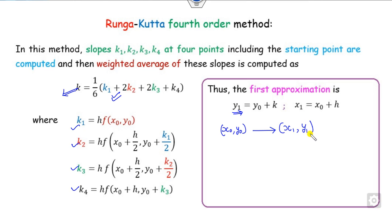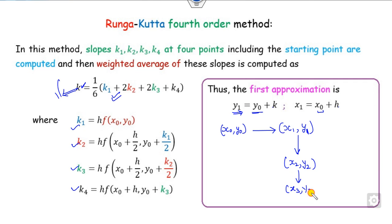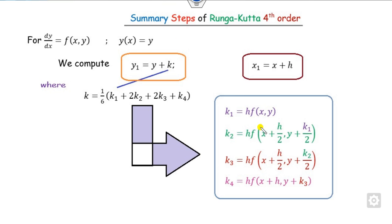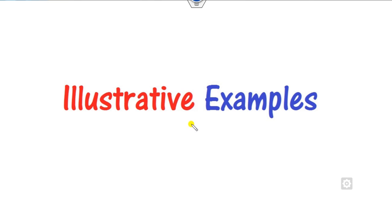Starting from (x0, y0), you get x1 = x0 + h and y1 = y0 + K. By considering x1 and y1, you repeat the same process to find x2, y2, then x3, y3, and so on, proceeding until you get the required solution in the particular interval. To summarize the steps: find K using this rule, then compute x1 and y1, and so on. We will now discuss five numerical examples of different kinds.